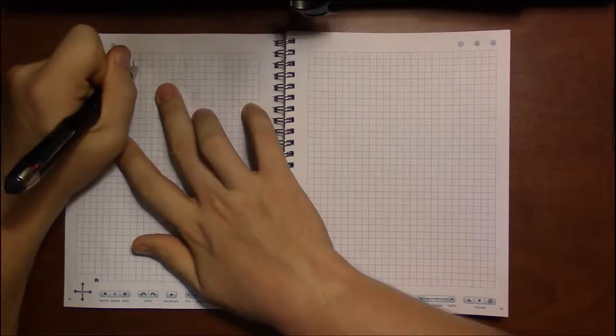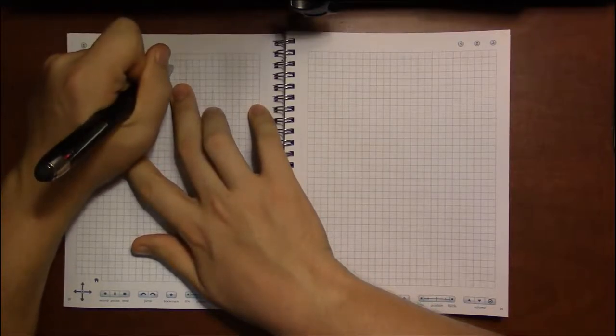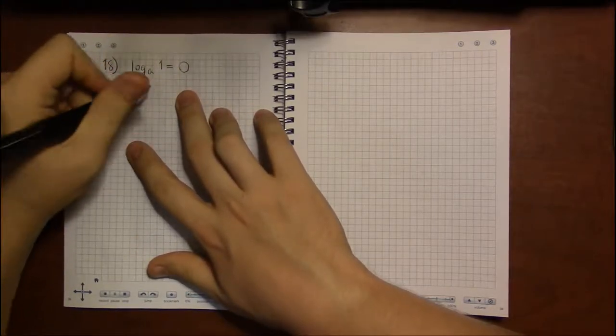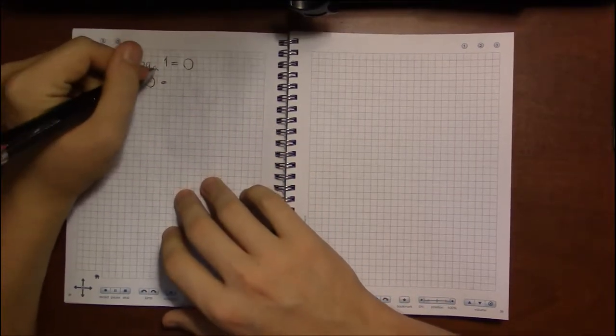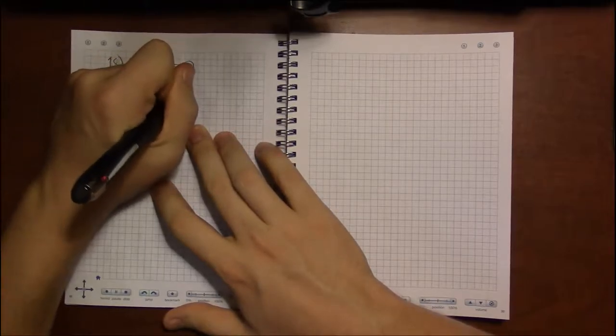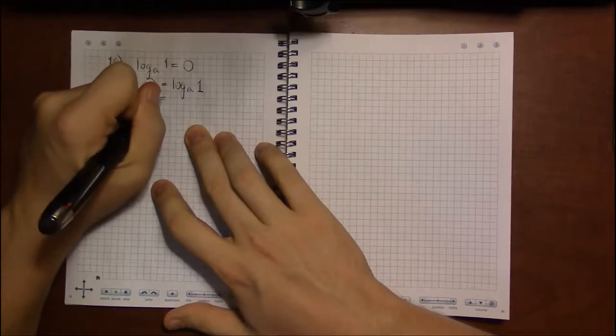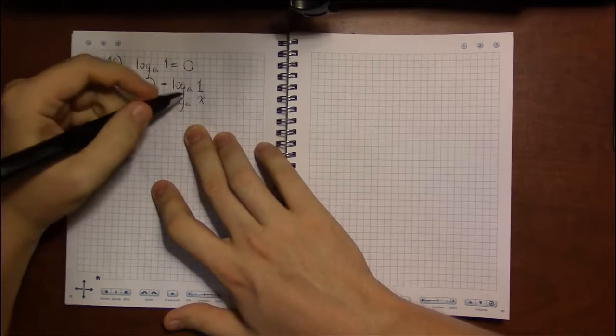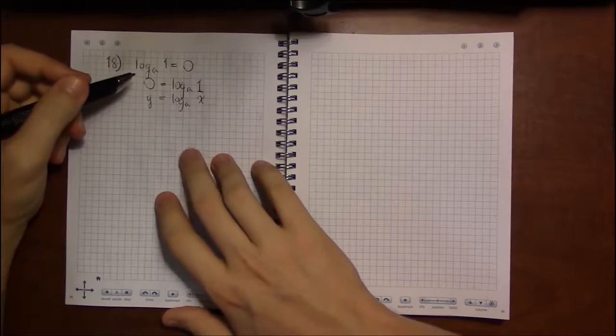I'm looking at problem 18, where we have log base a of 1 is equal to 0. Again, some kind of confusing stuff because we've got a's in the original problem. If I write this the way we've been writing it, we have y equals log base a. Well, that's not too bad. a is just a, so there's no real difficult conversion to go through here.